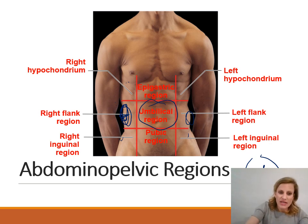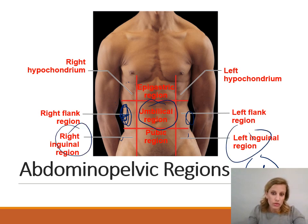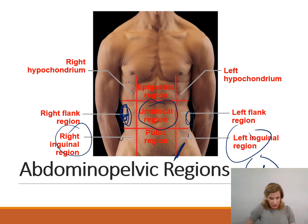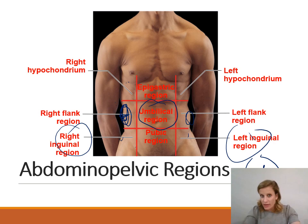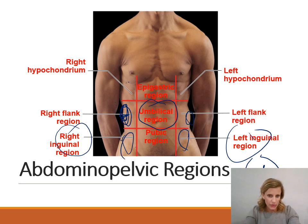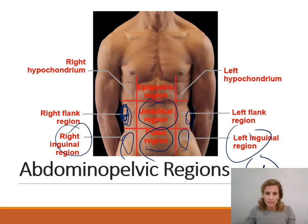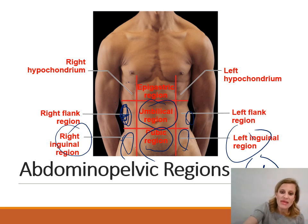The bottom three: on either side we have the right and left inguinal region. The inguinal crease is that little crease where the leg folds over the pelvis. This region is also sometimes referred to as iliac, so right iliac and left iliac is the same thing as inguinal. Finally, in the center is the pubic region, which is down in the pelvic area — so it makes sense that the bottom center region would be the pubic region.